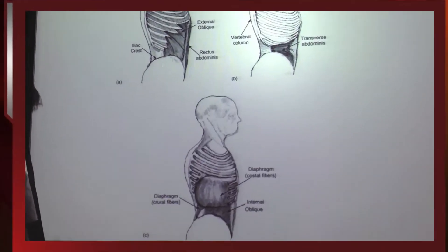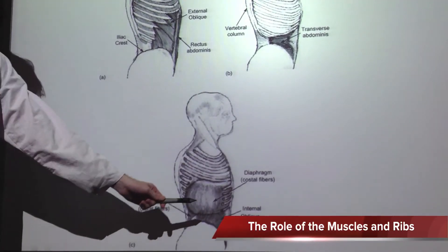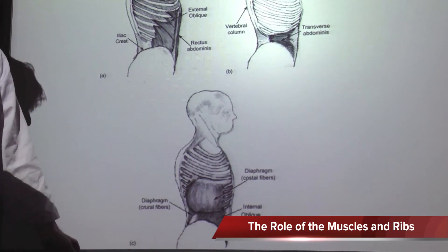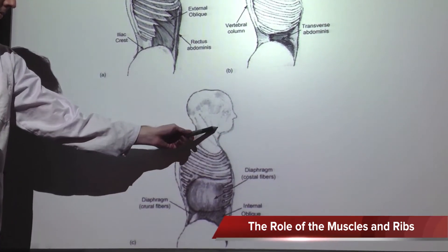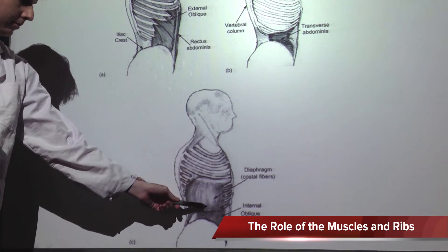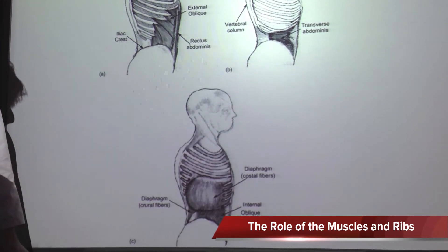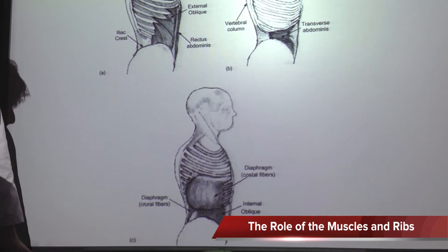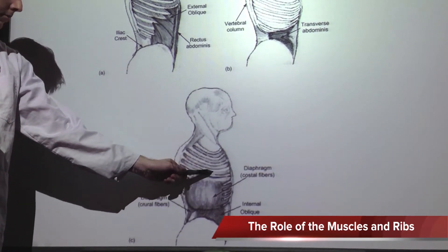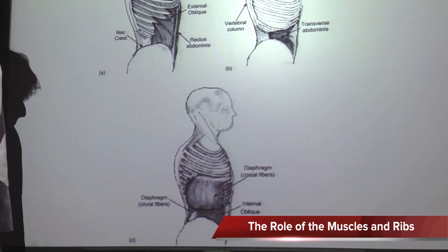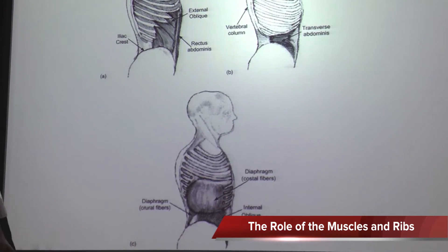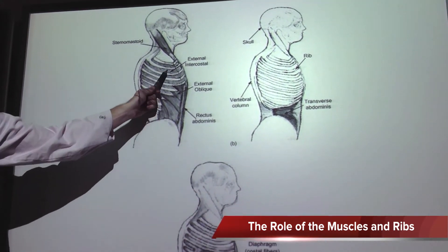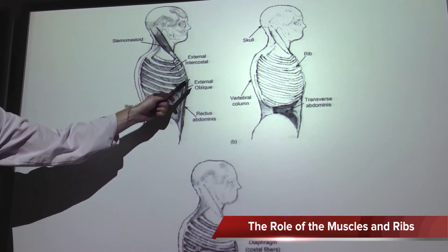In quiet breathing, the main muscle of respiration is the diaphragm. As it contracts, lung pressure decreases, drawing air down into the lungs along the pressure gradient. Quiet breathing expiration is passive — the respiratory muscles relax and the chest wall and lung return to their resting volume. Inspiration during exercise is aided by the external intercostals, which raise the ribs up and out, expanding the thoracic cage.